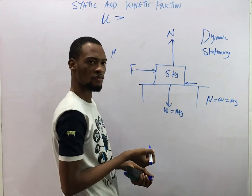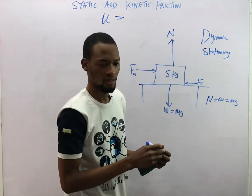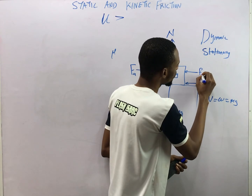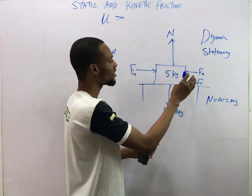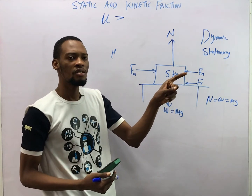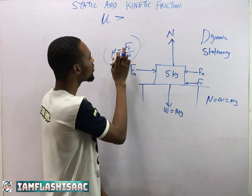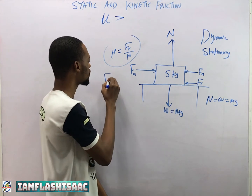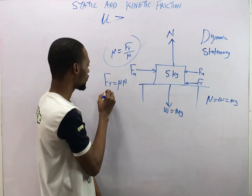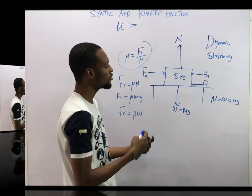The frictional force opposes the motion. Not all the force you apply actually moves the body — some is used to overcome friction. The coefficient of friction μ equals friction force over normal reaction, which implies that frictional force equals μN. Since normal reaction equals mg, therefore frictional force equals μmg, and friction equals μW. These are the useful formulas for solving questions under friction.